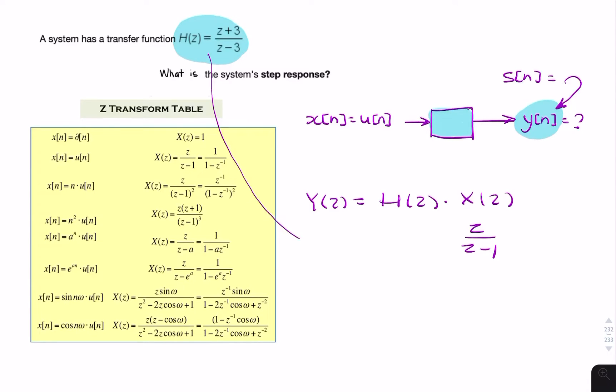h of z, given in the question, is z plus 3 over z minus 3. That is the output, the step response.